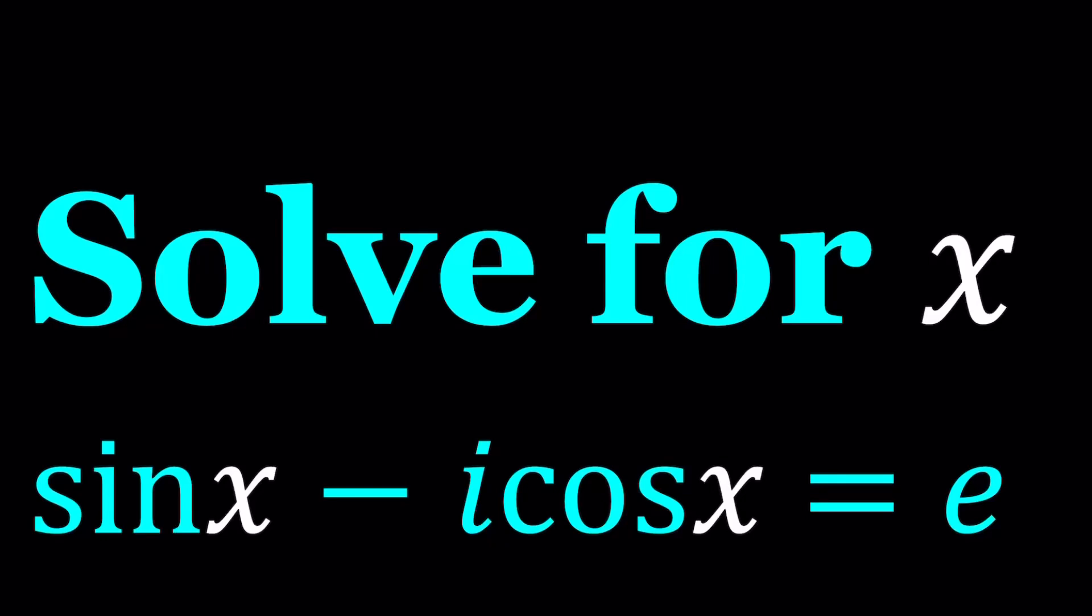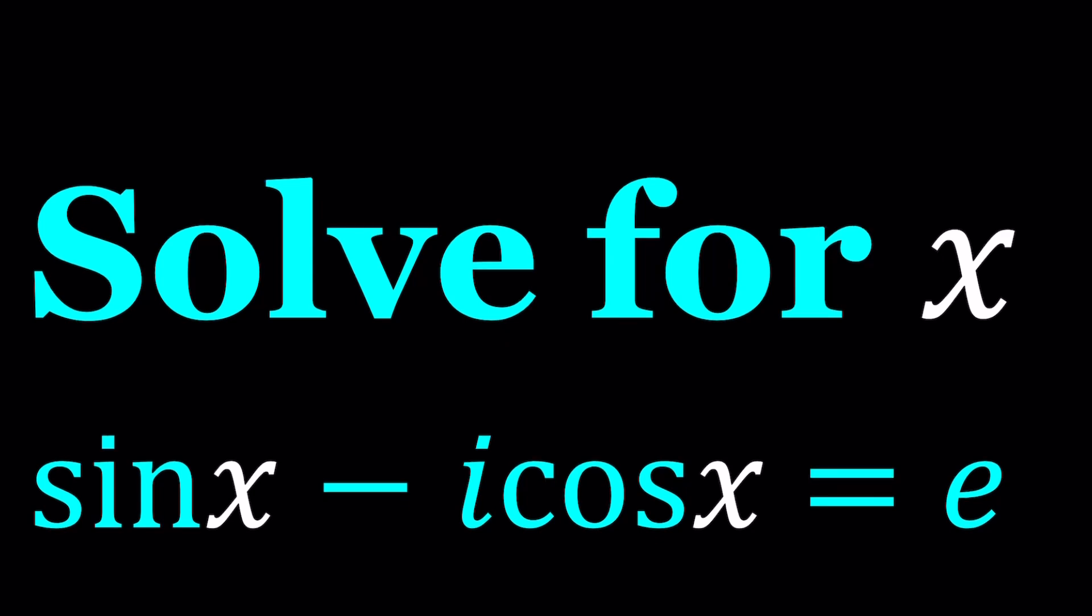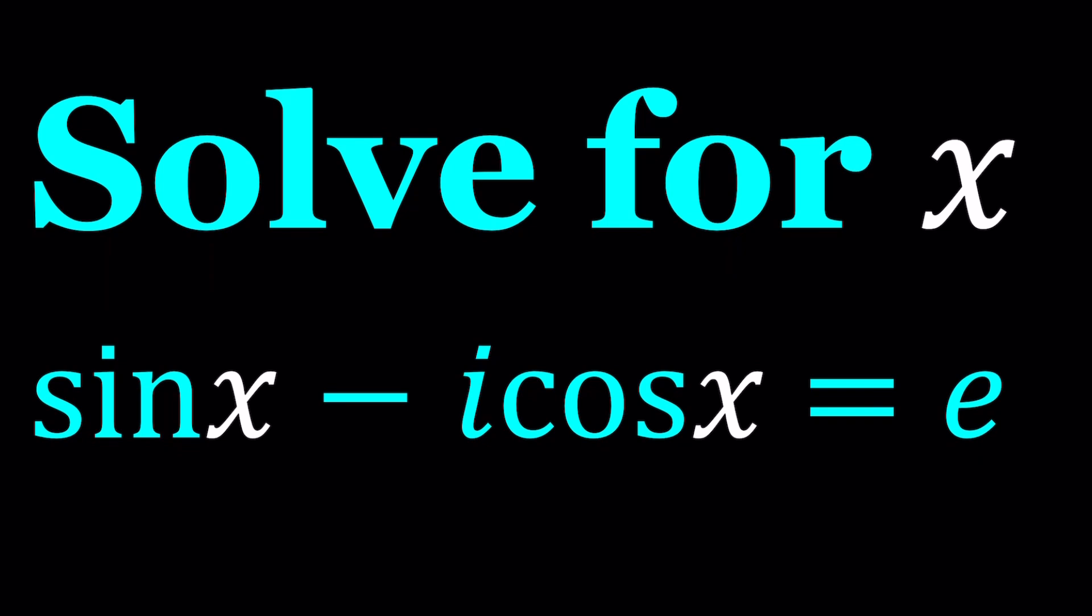Hello everyone, in this video we're going to be solving a complex trigonometric equation with Euler's number. So a lot of good things together. We have sine x minus i times cosine x equals e, and we're going to be solving for x. I'll be presenting two methods, and let's start with the first one.